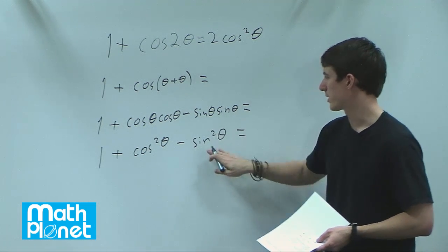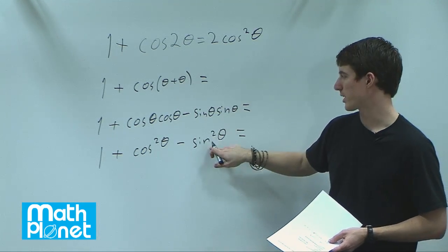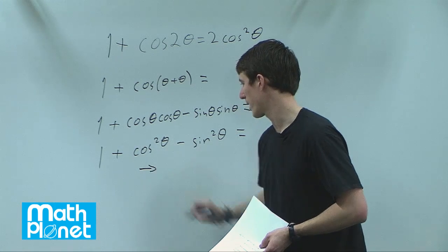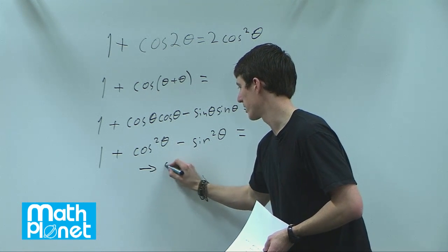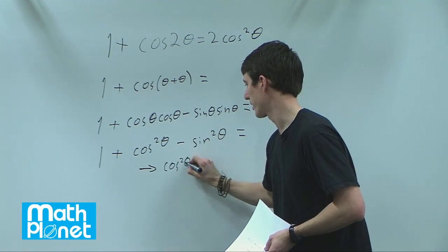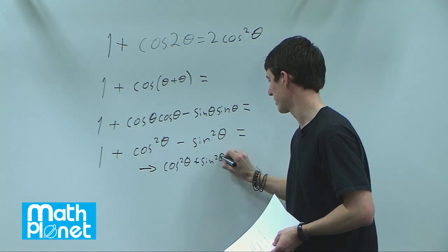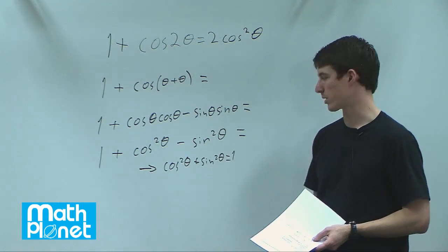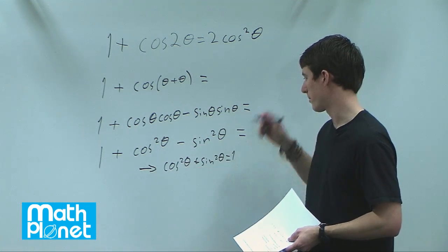So we have a sine squared theta here and not here. So let's replace this in favor of cosine, given the identity that cosine squared theta plus sine squared theta equals 1. So we're going to replace this sine squared theta with 1 minus cosine squared theta.